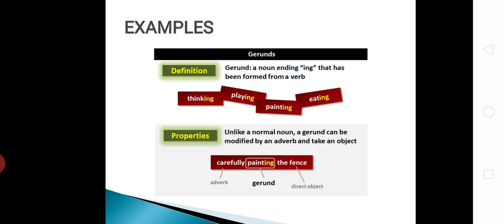Okay, now some other examples of gerund like thinking, playing, painting, eating. And properties of gerund is: unlike a normal noun, a gerund can be modified by an adverb and take an object. Carefully painting the fence. Another example is I like cooking. So, cooking is a verb.